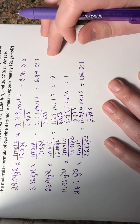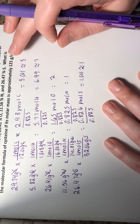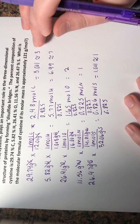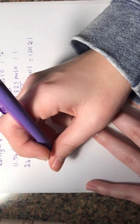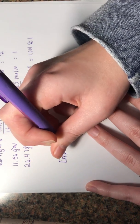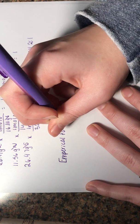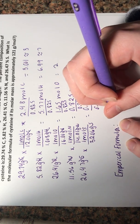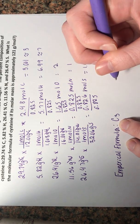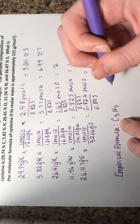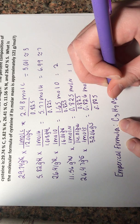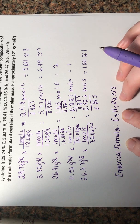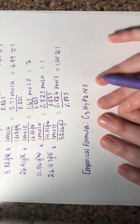Now these numbers are actually our subscripts for our empirical formula, not our molecular formula, our empirical formula. So if we're going to write out our empirical formula, we would have C3, H7, O2, N1 so N, and S. So C3, H7, O2, N, S. This is our empirical formula.